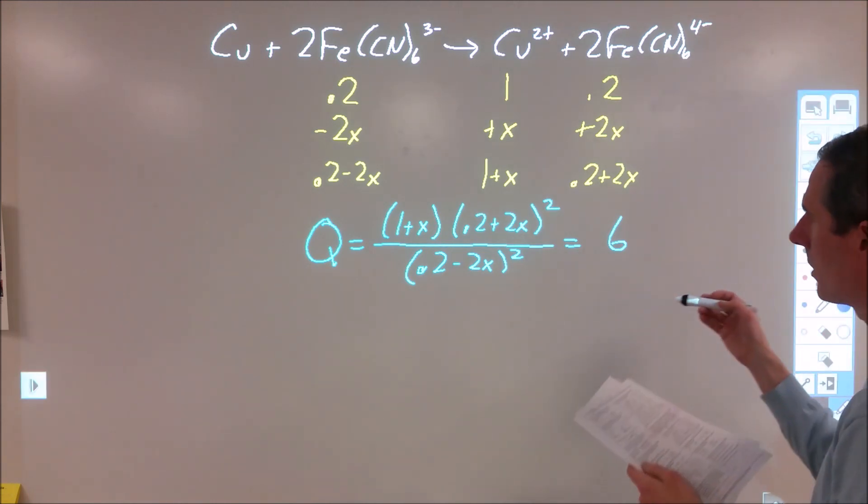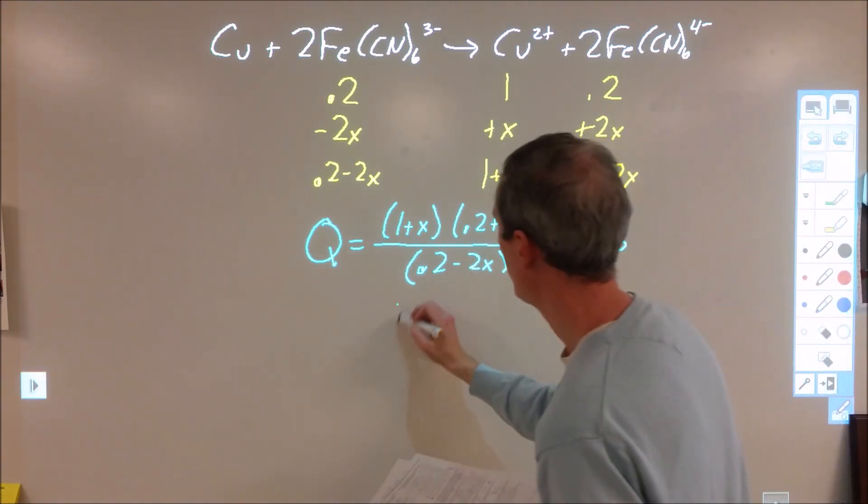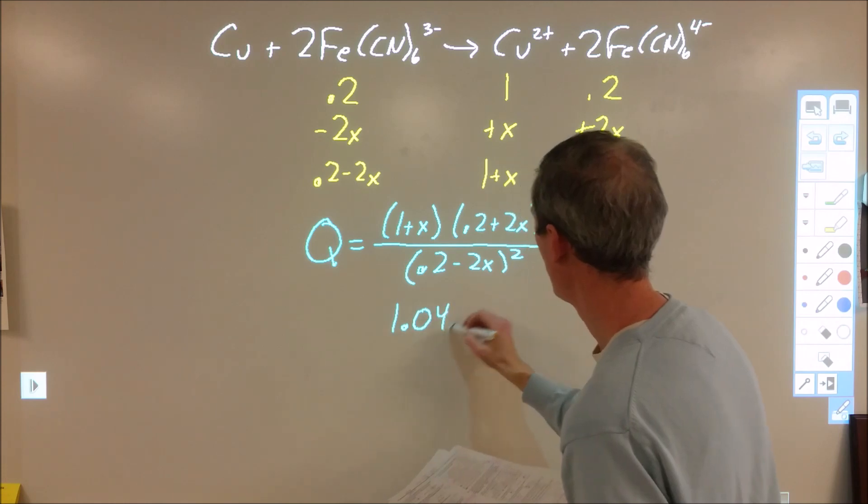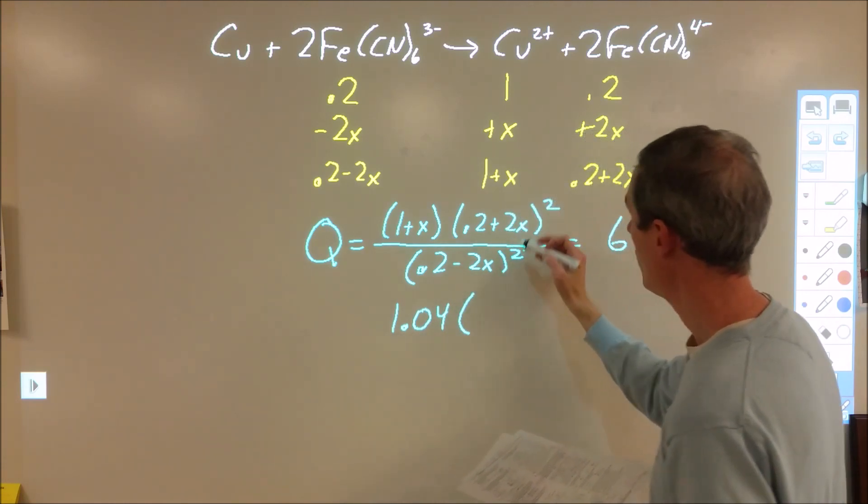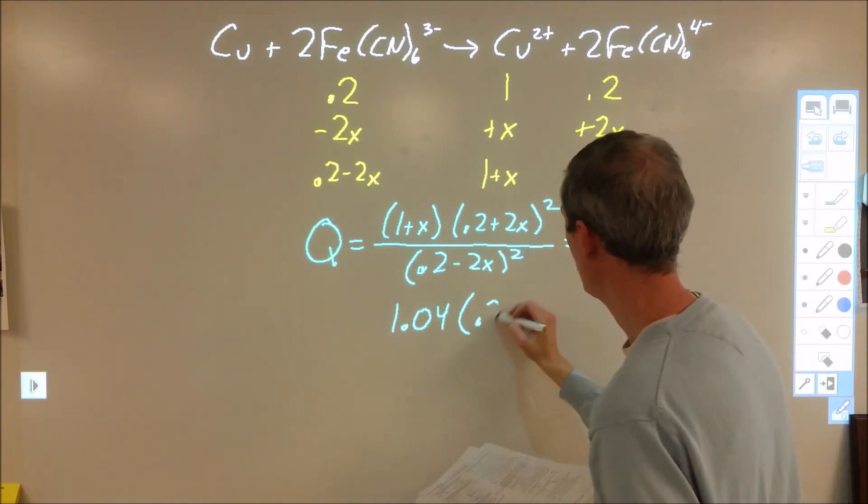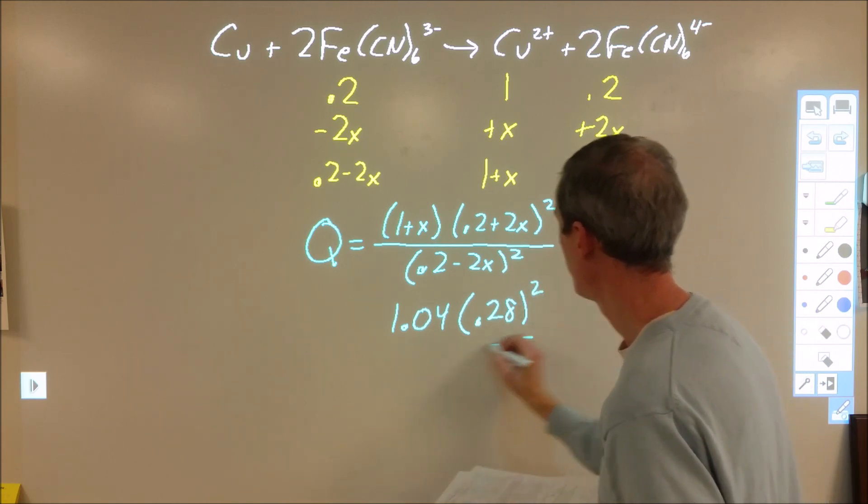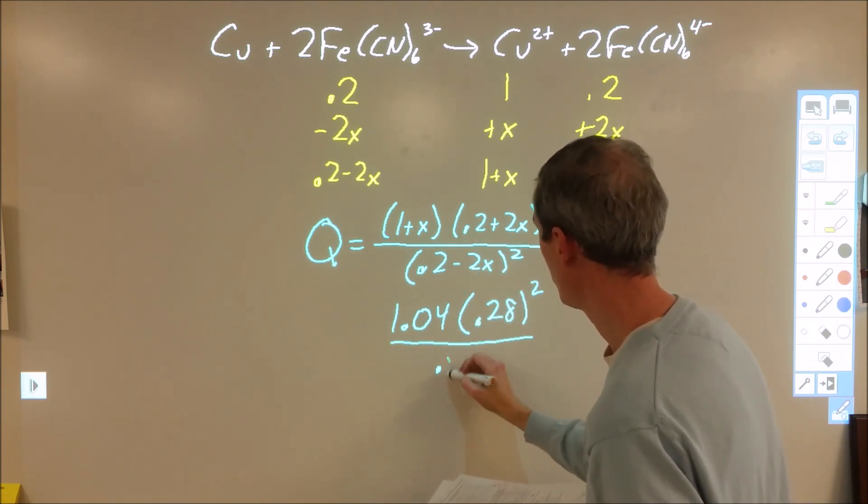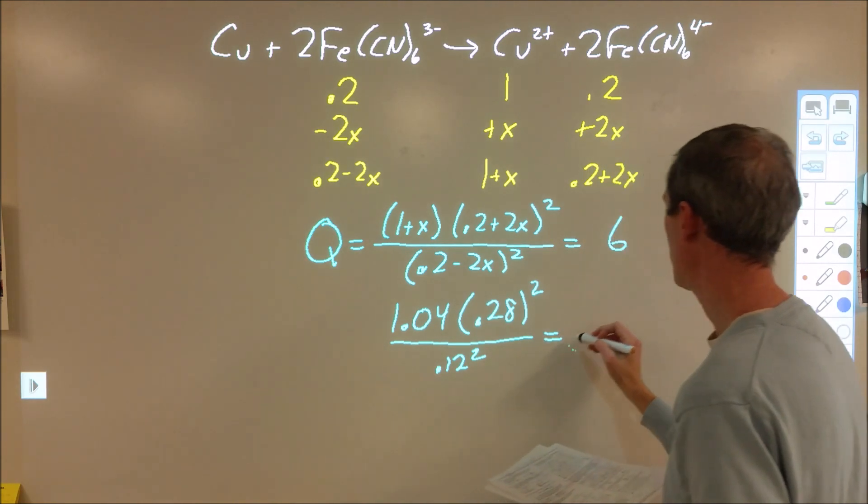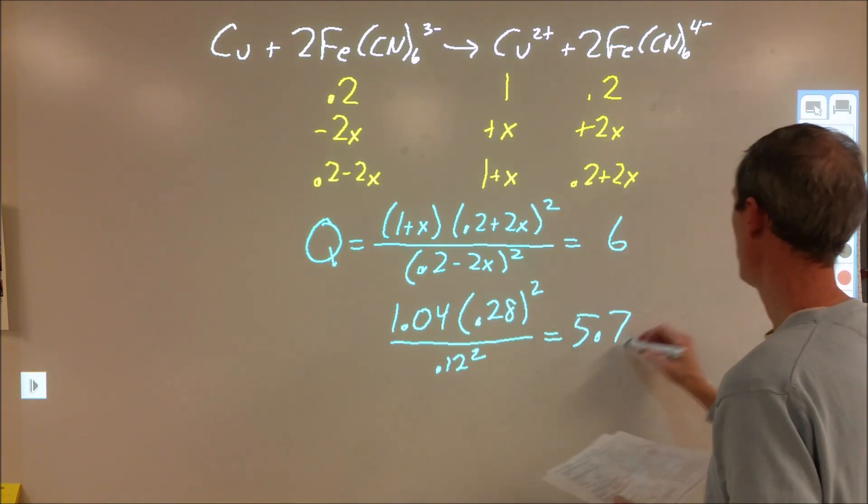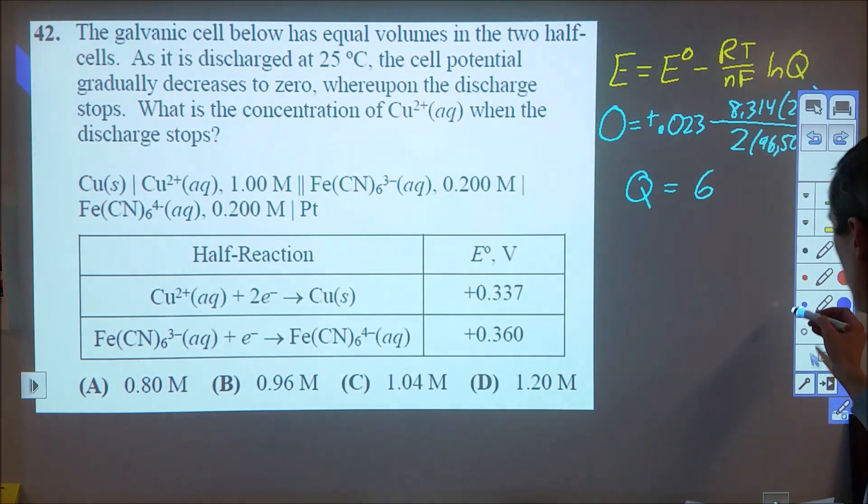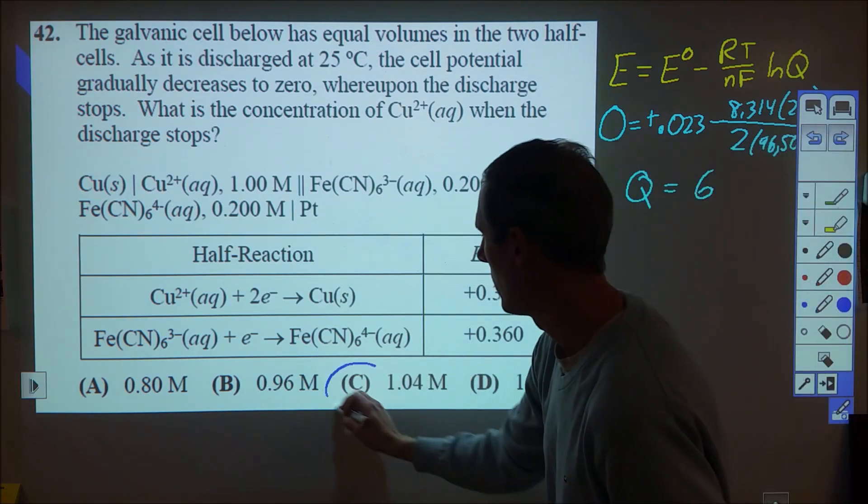But just to kind of go through quickly, if we plug this in, we end up with 1.04 times 0.2 plus 0.08, so 0.28 quantity squared, over 0.2 minus 0.08, which is 0.12 quantity squared. And that comes out to 5.7, which is close enough to 6. So we can go ahead and confirm that C is indeed our choice.